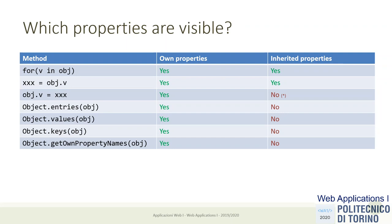The prototype chain is only searched when iterating with `for...in` or when reading a property. This very small difference is enough to create all of object orientation in JavaScript. We're studying a language where everything is based on prototypes instead of classes. You can have a quick look at a comparison table from Mozilla Developer Network comparing Java with JavaScript.